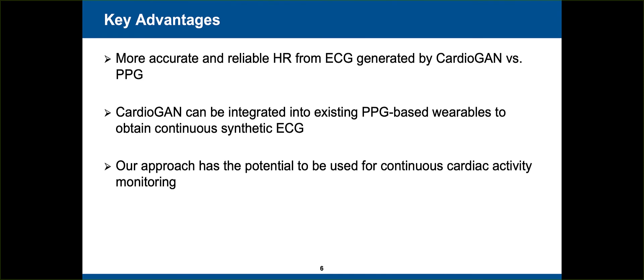Our experiments on public datasets containing both PPG and ECG show that heart rate measured from the ECG generated by CardioGAN is more accurate and reliable compared to heart rate measured from the original input PPG, reducing the error from 9.74 beats per minute when measured from the PPG to 2.89 when measured from the generated ECG.